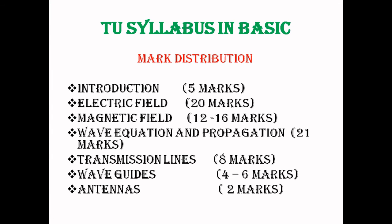Now for mark distribution on an exam basis: Chapter 1, Introduction — 5 marks. Chapter 2, Electric Field — 20 marks. Chapter 3, Magnetic Field — 16 marks. Chapter 4, Wave Equation and Propagation — 21 marks. Chapter 5, Transmission Line — 8 marks. Chapter 6, Wave Guides — 4 to 6 marks. And Chapter 7, Antenna — 2 marks. Note that there may be some variation in these marks.